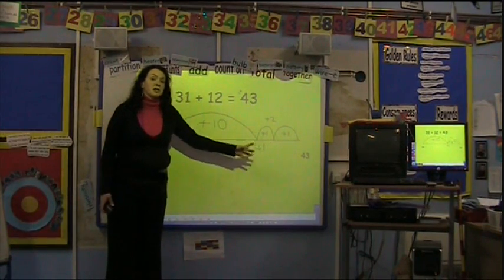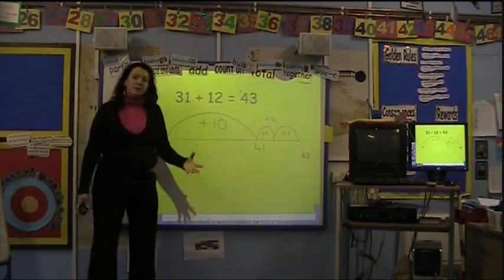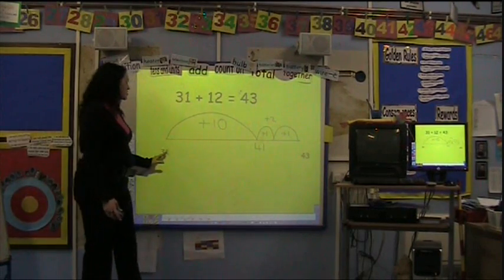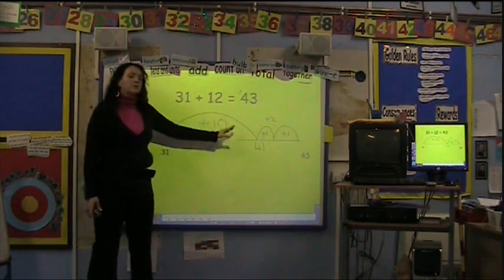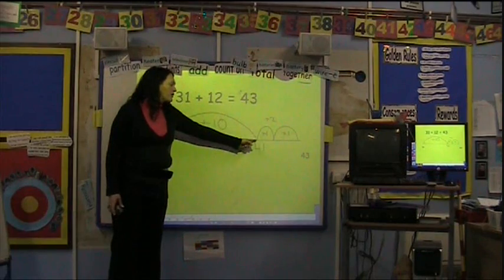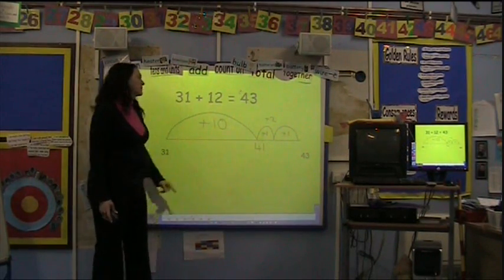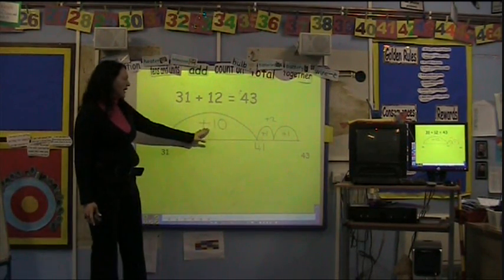Now, the children should be used to, by this stage, adding multiples of 10 to a number. So the children would know that 31 add 10 would be 41. 41 is then written on the empty number line with a jump of add 10.